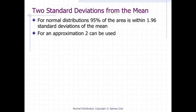For all normal distributions, 95% of the area is within 1.96 standard deviations of the mean. For quick approximations, it is sometimes useful to round off and use 2 rather than 1.96.